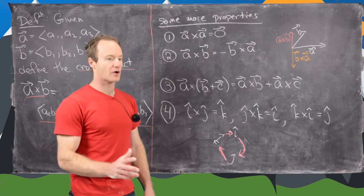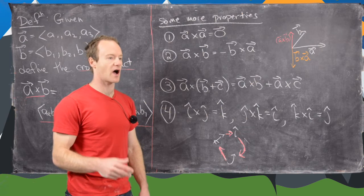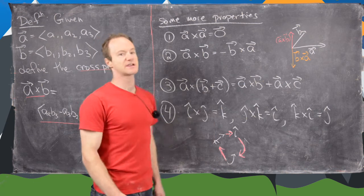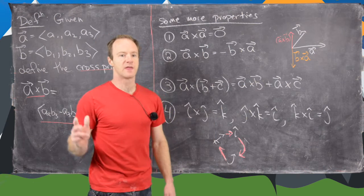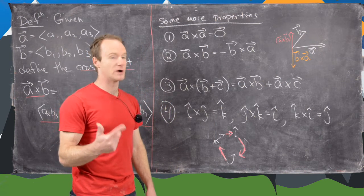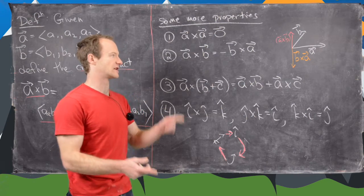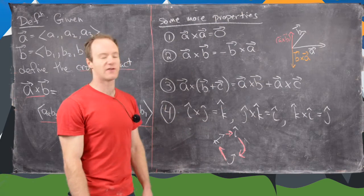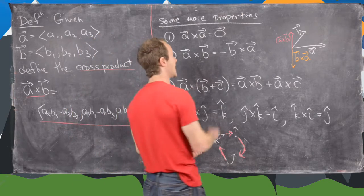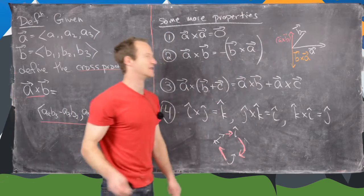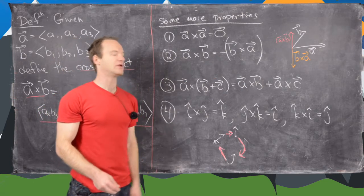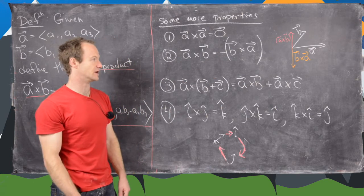Think of it this way: the cross product produces a vector orthogonal to the two you started with, but if you only start with one vector, the system is confused — it can't decide which direction to take the orthogonal vector because you have a whole plane. Also, a cross b equals negative b cross a, so the cross product is not commutative. When you commute the vectors, you get a minus sign — this is sometimes called anti-commutative.